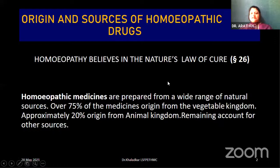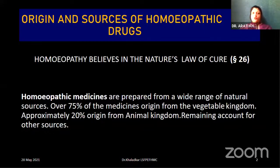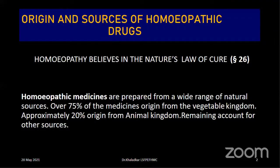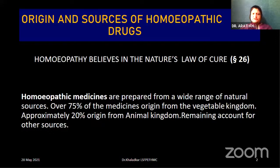Homeopathic medicines are prepared from a wide range of natural sources. Over 75% of the medicines originate from the vegetable kingdom. Students, focus, because we are going to see each and every slide with concentration. You need to be alert and vigilant, because it's not possible to give all examples. But I have tried to give you the maximum essentiality of every source and sub-source, and we will also see some interesting highlights. So let us begin.